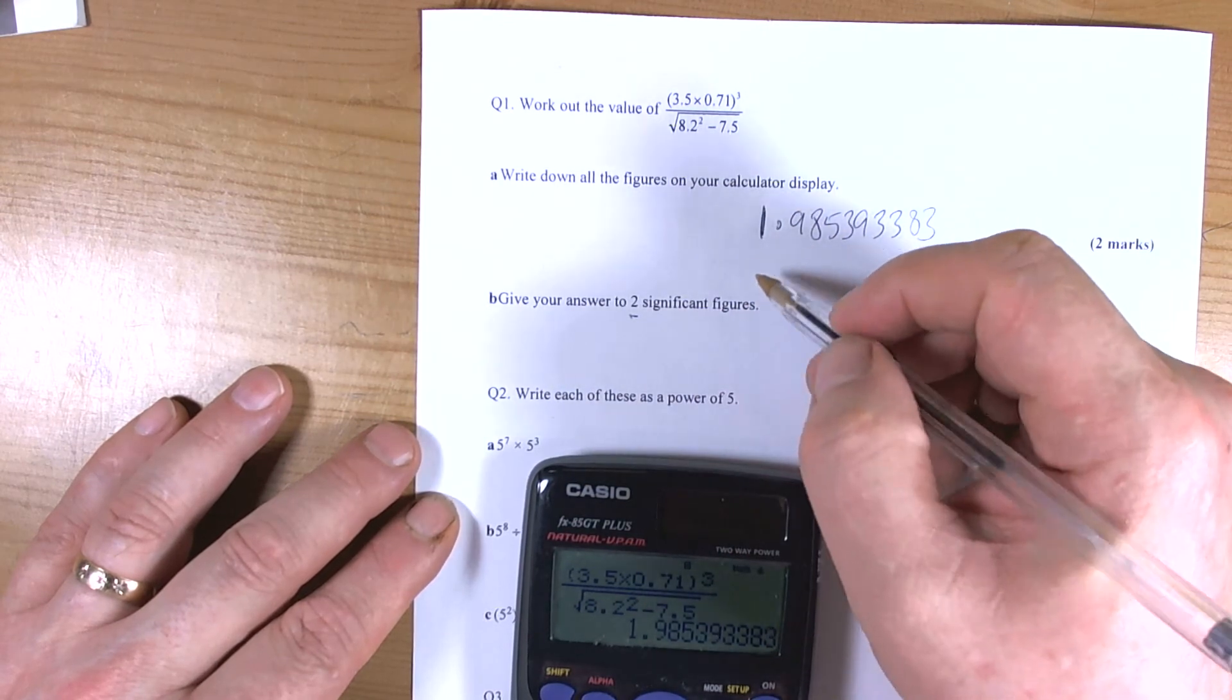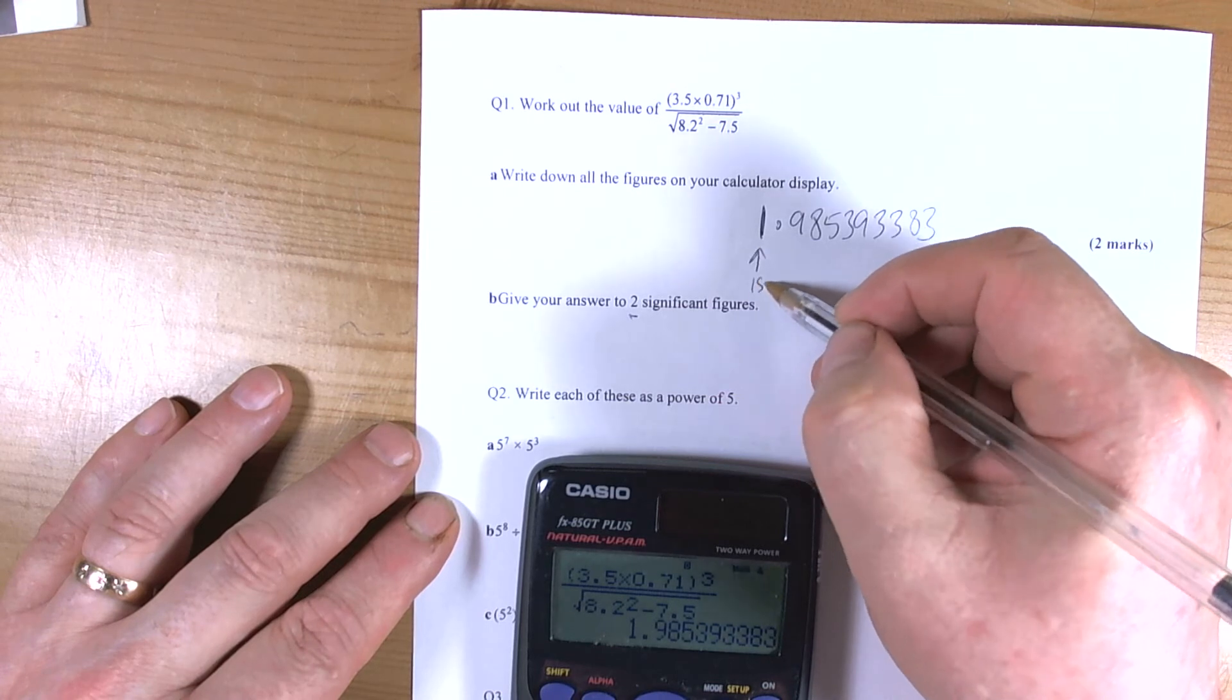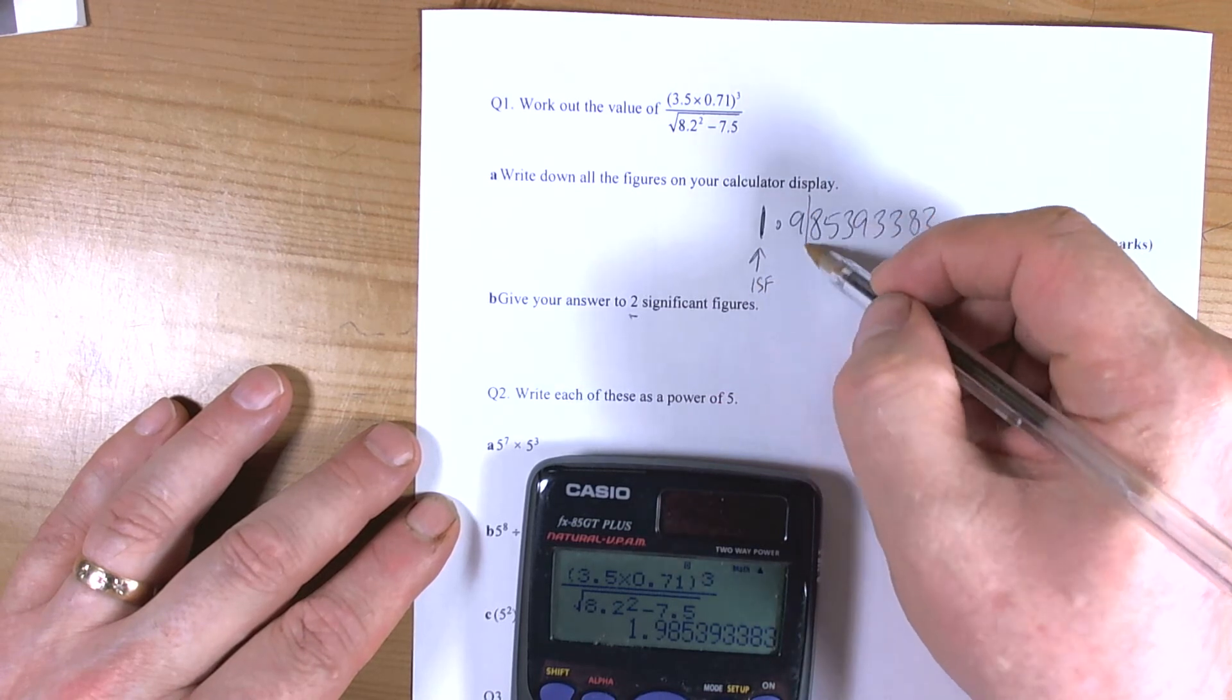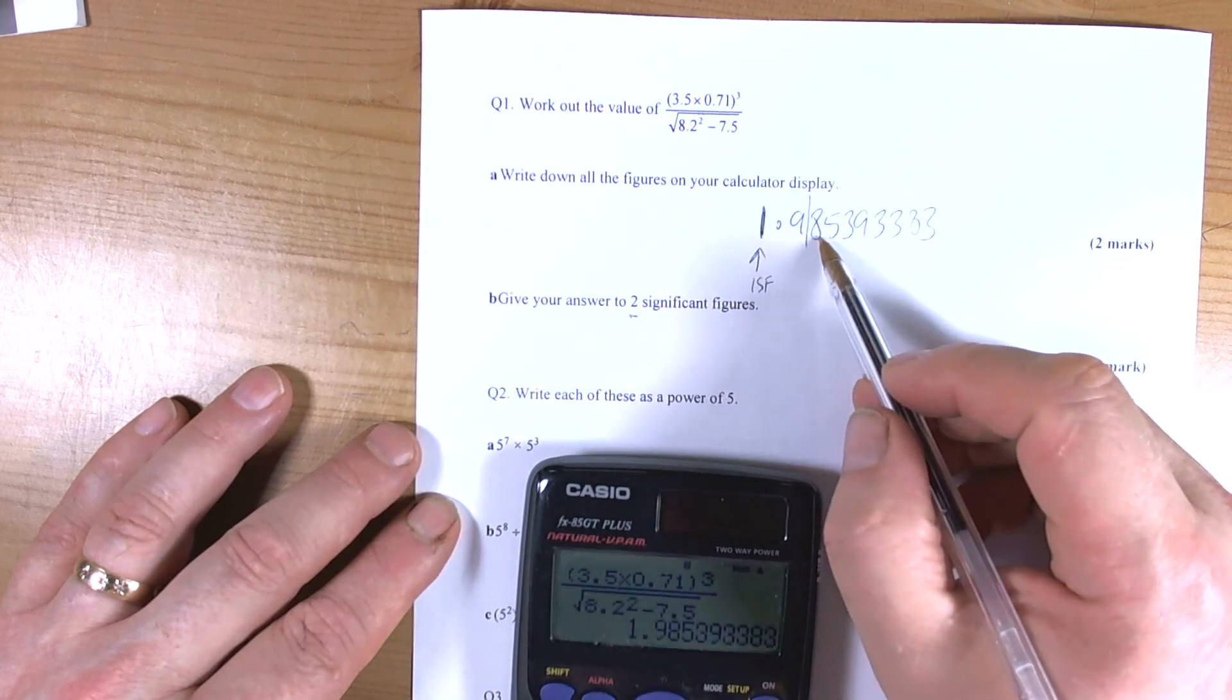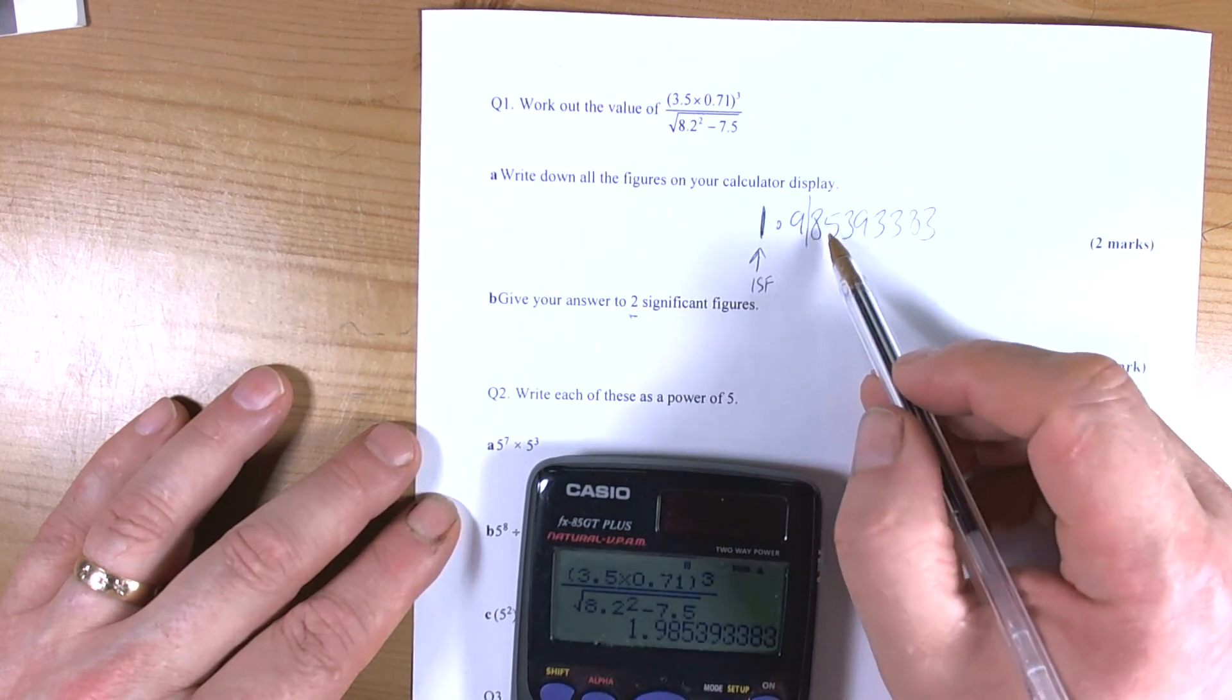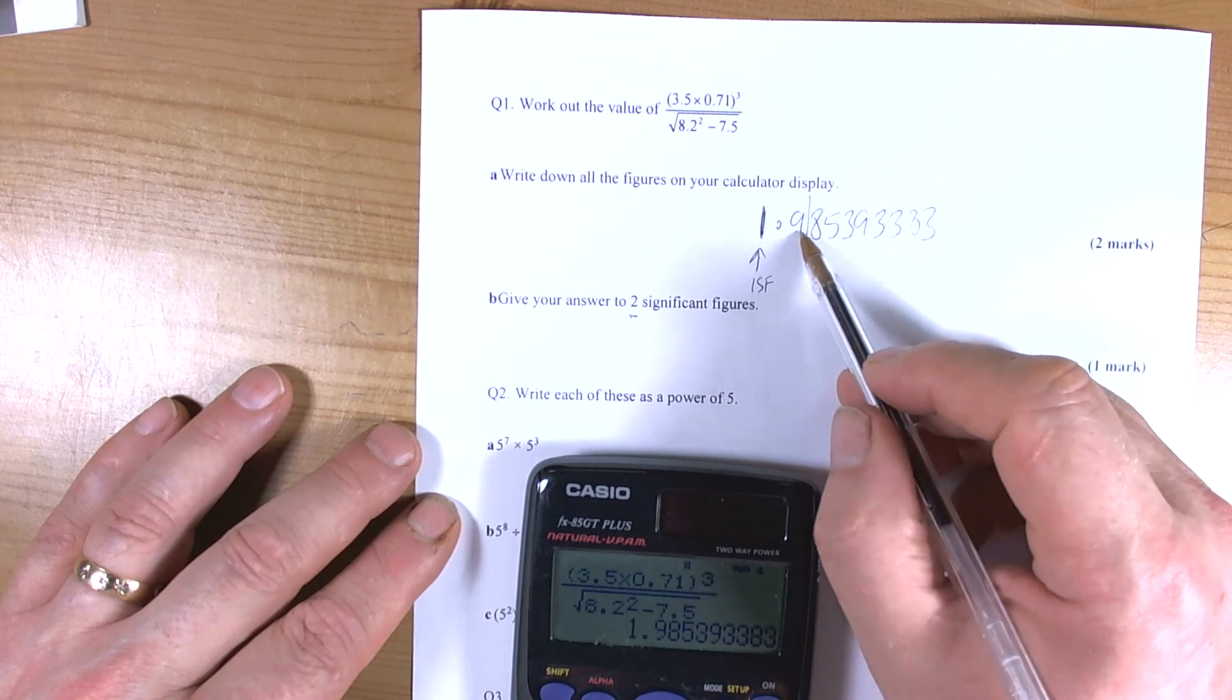And 2 significant figures means we find the first non-zero digit. So that's going to be the 1, so that's the first significant figure. So we're going to cut this number there and we check whether the third significant figure changes the second one. It's more than 5 hundredths so that's going to change that to 10 tenths.